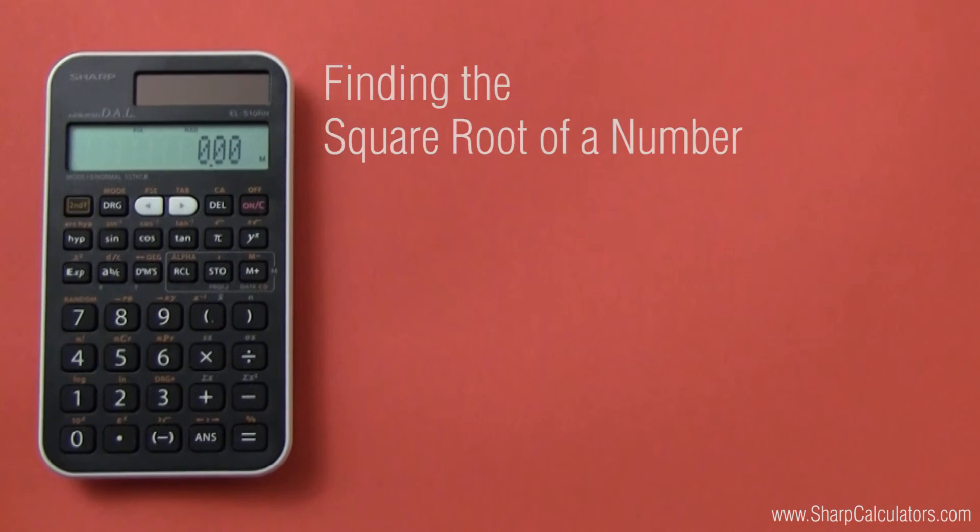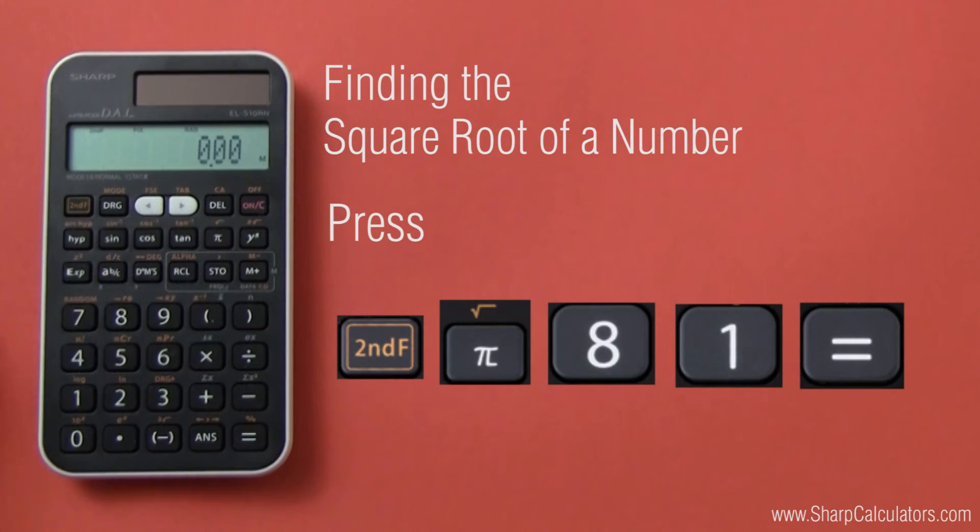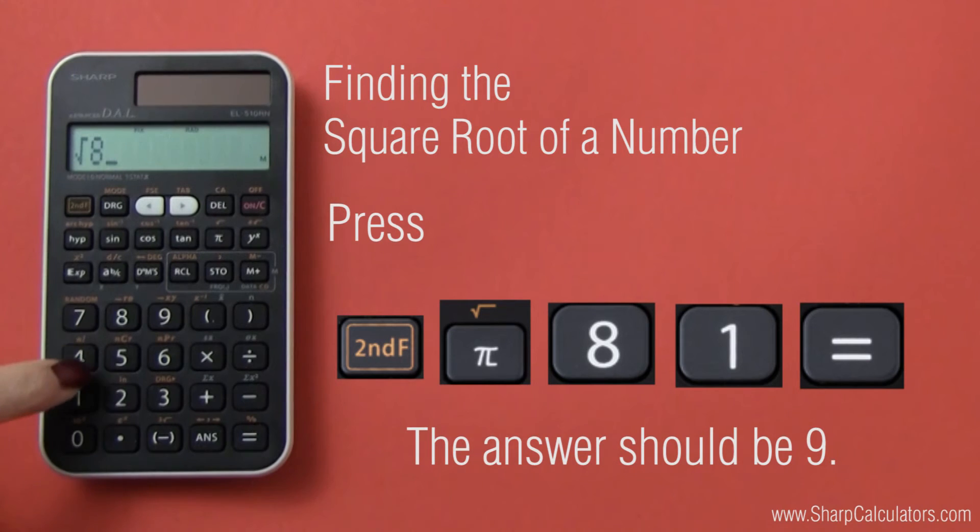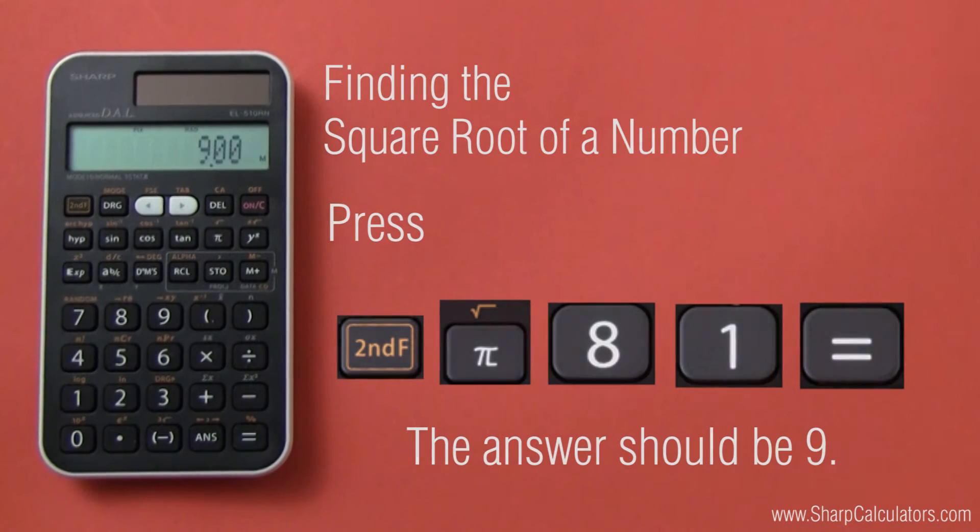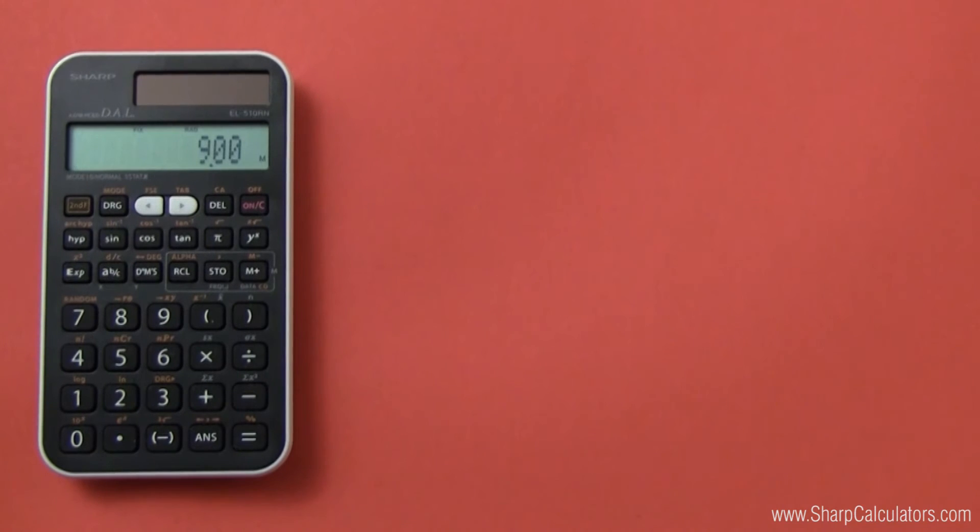To find a square root on your EL510RNB, press 2F, pi, your desired number, then the equal sign. If you get another answer, recheck your calculator settings and entry method and try again.